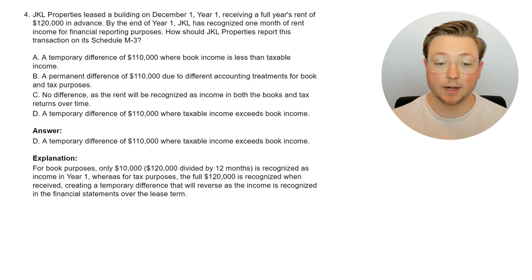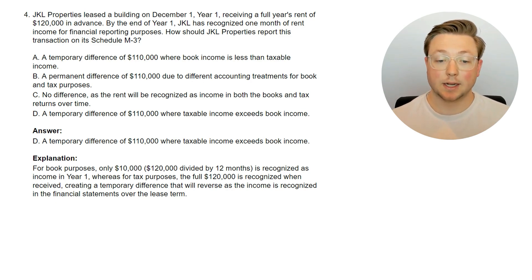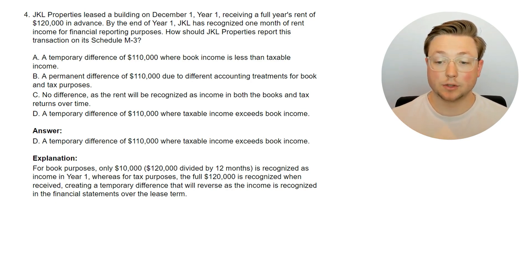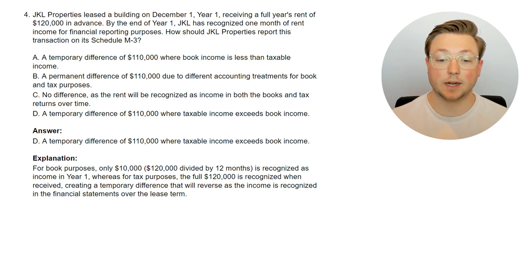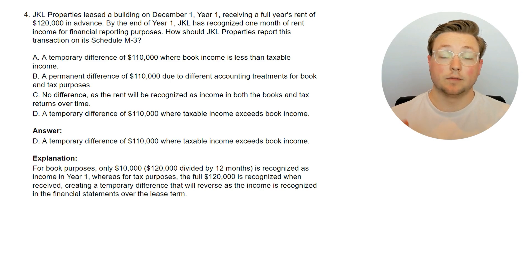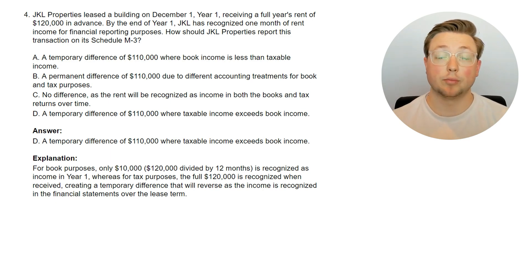There's a temporary difference of $110,000 where taxable income exceeds book income. For book purposes, only $10,000 — which is $120,000 divided by 12 months — is recognized as income in year 1 since it was only December. Whereas for tax purposes, the full $120,000 is recognized when received, creating a temporary difference that will reverse as the income is recognized in the financial statements over the lease term. For rent received in advance, tax requires recognizing that income in that year.